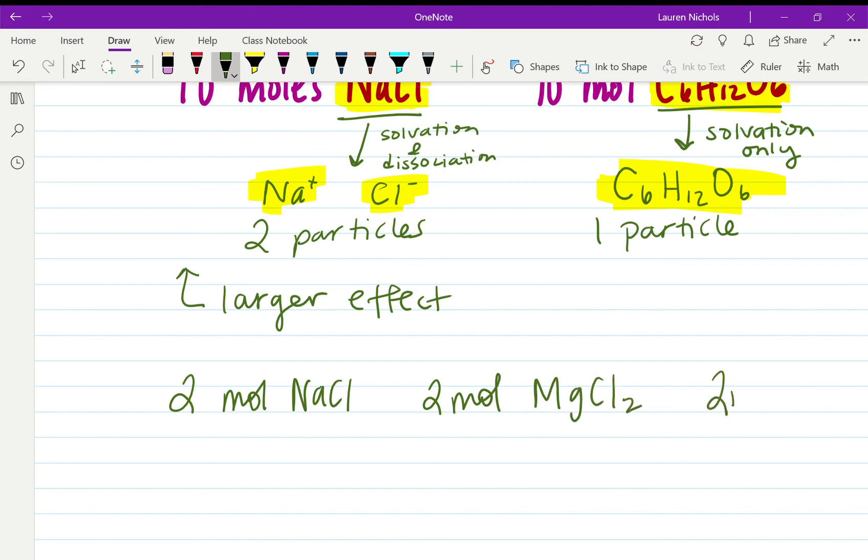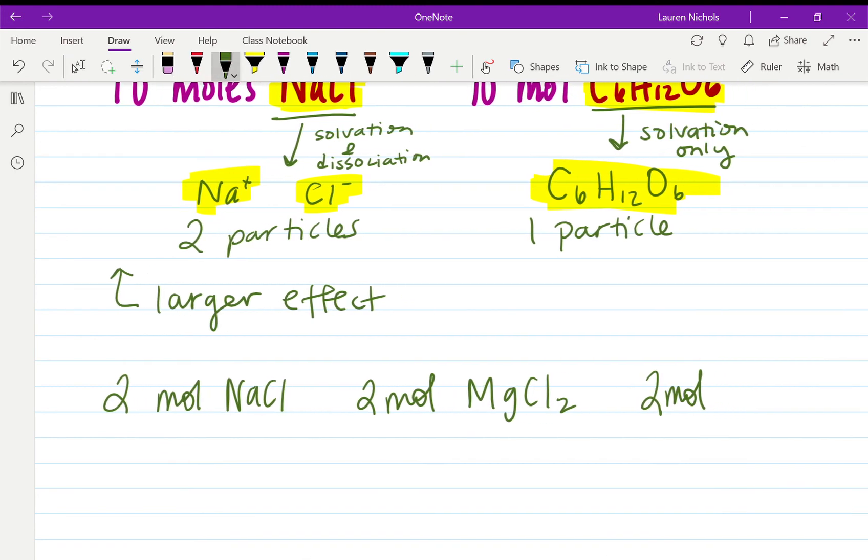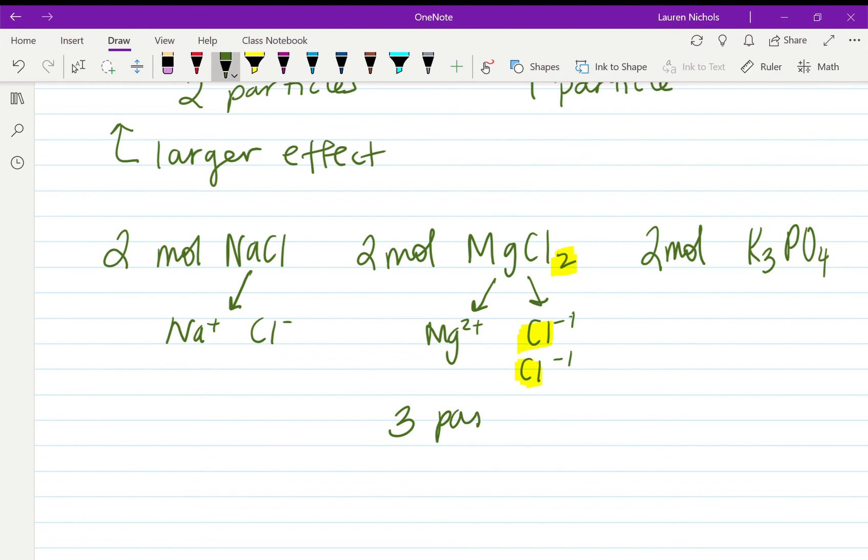You can see this in multiple ways. If I have two moles of NaCl and I have two moles of MgCl2 and I have two moles of potassium phosphate, they're all ionic. But when they dissociate, this one will produce Na+ and Cl-, so that's two particles. This one will dissolve into magnesium with a +2 charge and two chlorines because we have that subscript 2 here, which means I have two chlorines, and so that is a total of three particles.